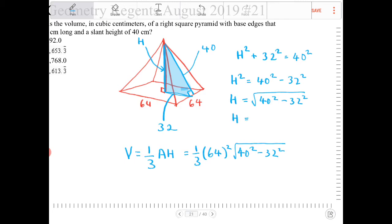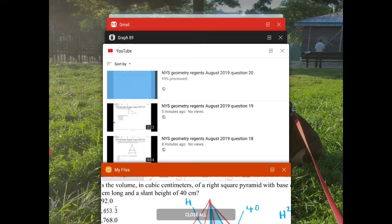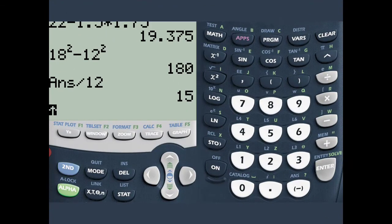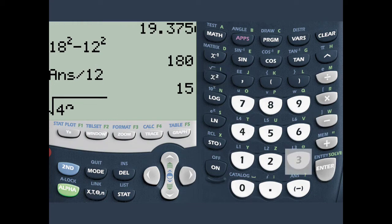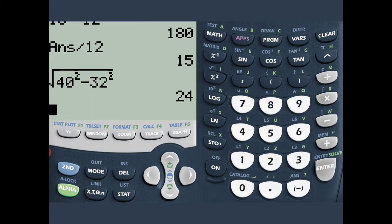So let's do that. Square root of 40² - 32² is 24.